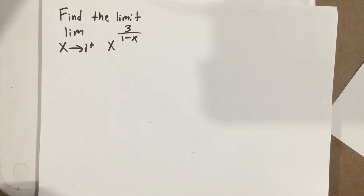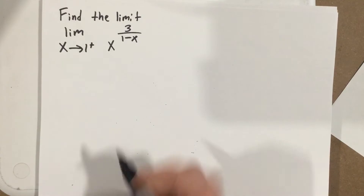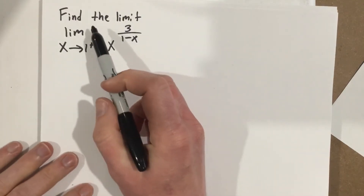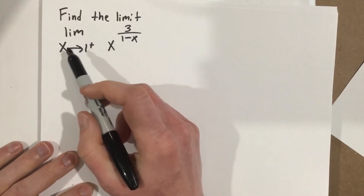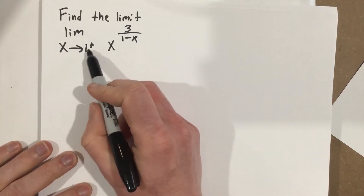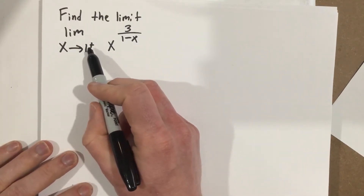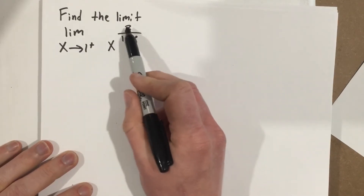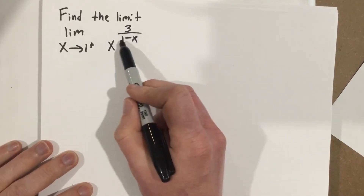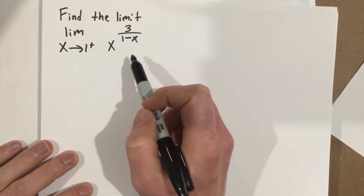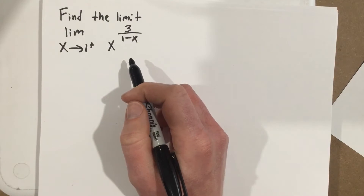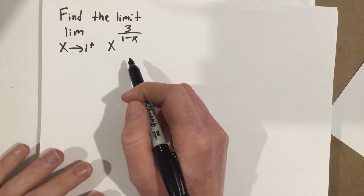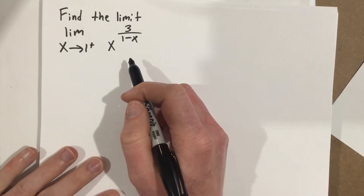This is problem number one from section 4.5. We want to find the limit as x approaches 1 from the right of x to the 3 over 1 minus x. This section covers L'Hôpital's rule.